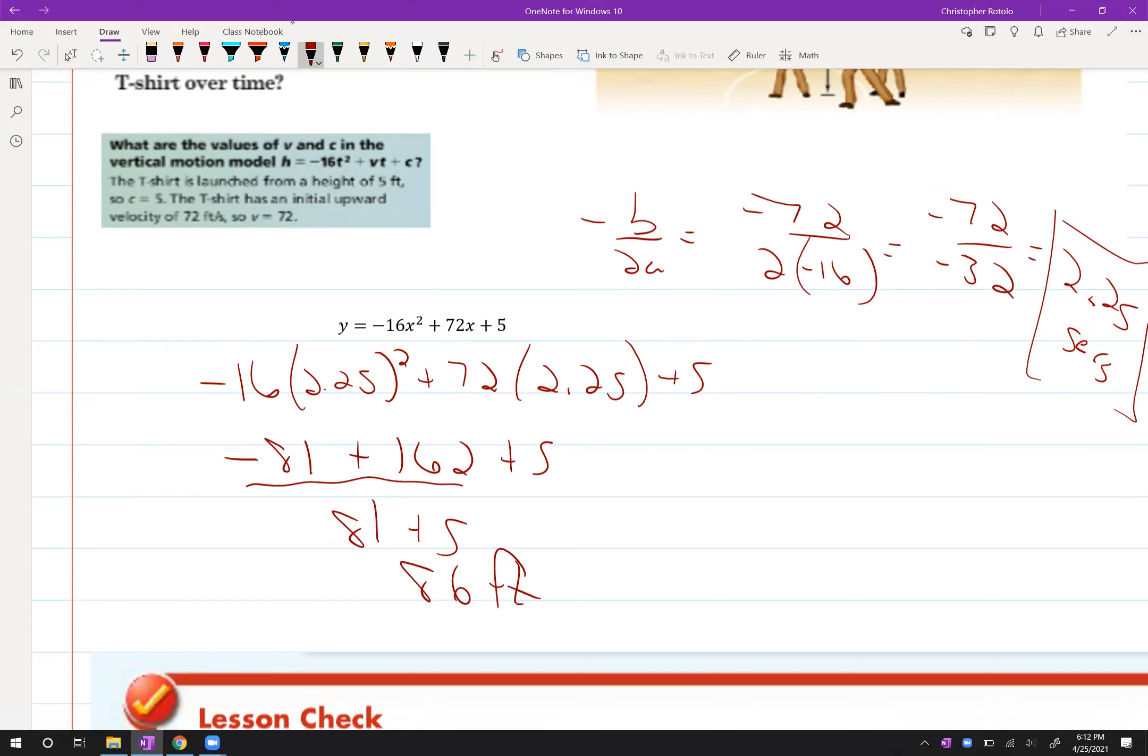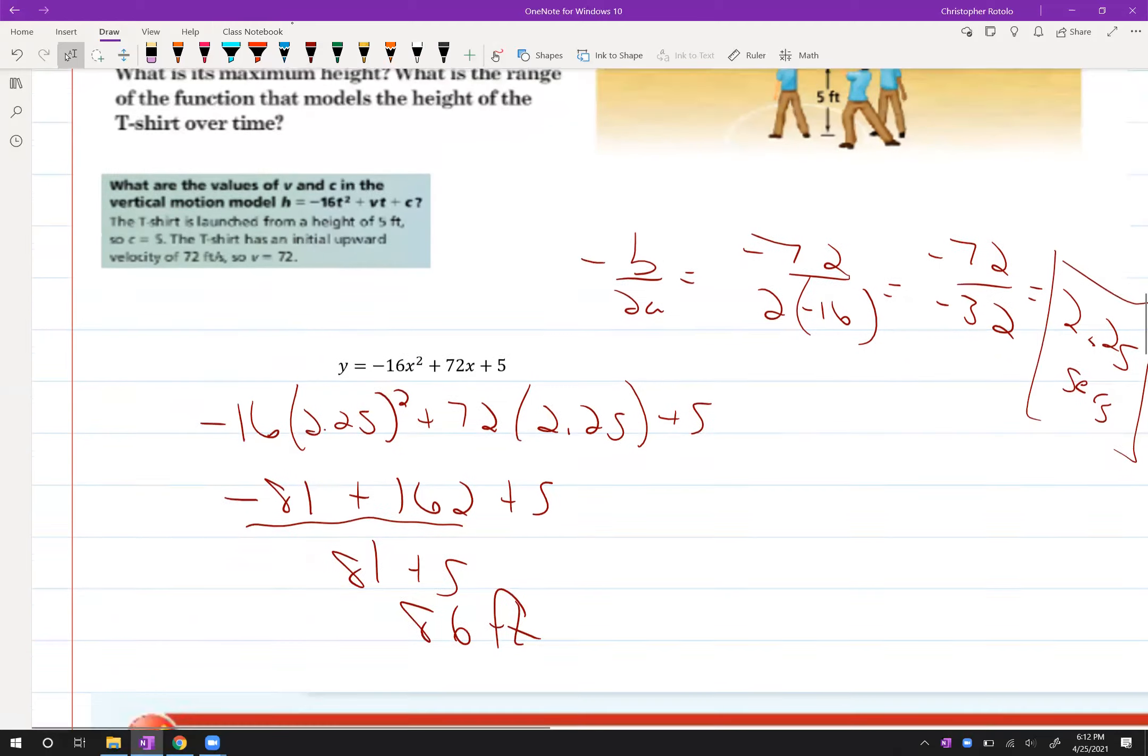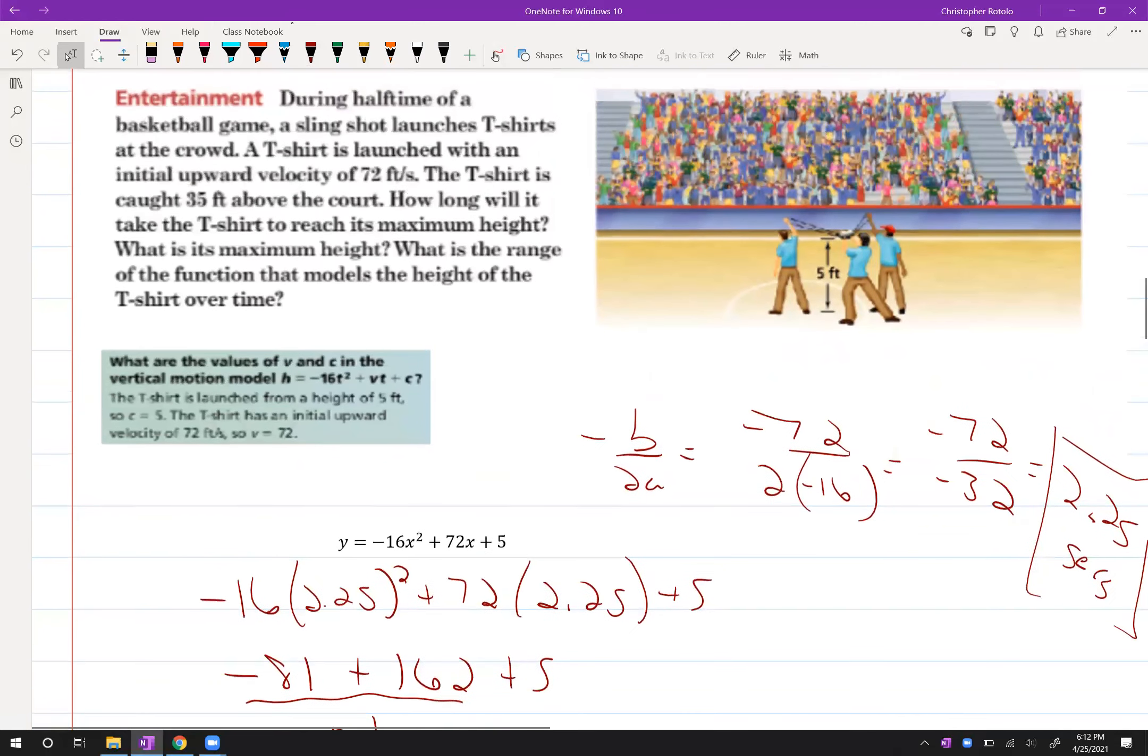All right. So this time, this team that was shooting these t-shirts, they were able to launch it a little bit higher. So it took a little bit longer, 2.25 seconds, and it reached 86 feet. And we can talk about the range and all those things. So we're going to shoot it. It's caught 35 feet above. So it's a range, but it started, where did they start?